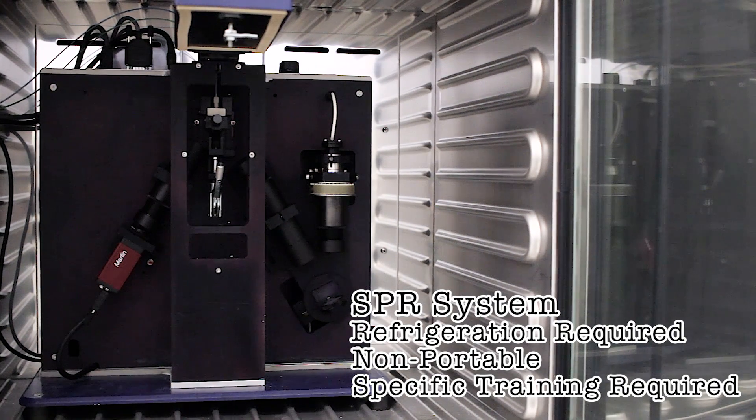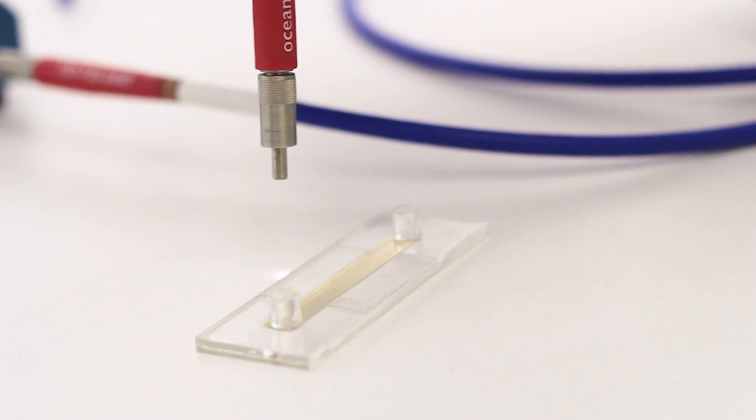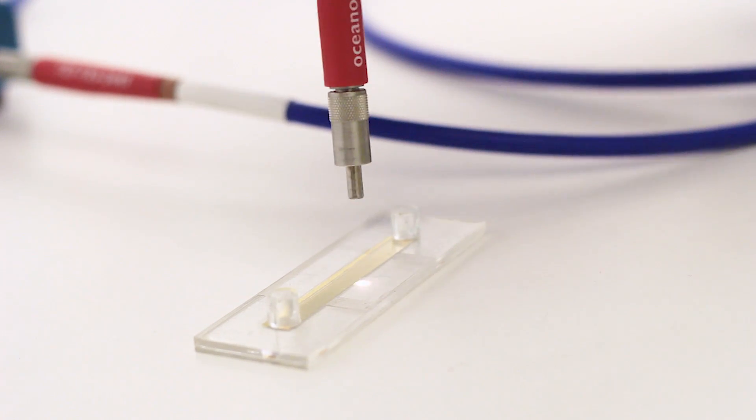Our research focuses on making an inexpensive sensor that will fit in the palm of the hand. The nanostructures we add to the metal films allow for the laser and fancy optics to be replaced with a simple lightbulb and camera.